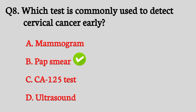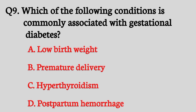Question number nine. Which of the following conditions is commonly associated with gestational diabetes? The right answer is option B: Premature delivery.